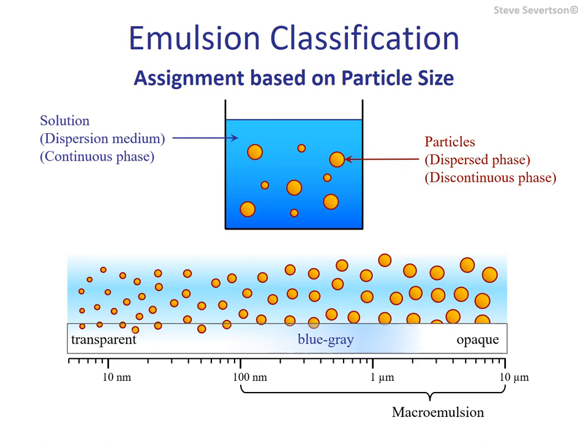Many emulsions, often considered a subset of macro emulsions, possess particle sizes ranging in radius from 100 nanometers up to 1 micron. Such emulsions are translucent, possessing a blue-gray hue. Nano emulsions are kinetically stable colloids possessing particle radii ranging from about 10 up to 100 nanometers, and such colloids are optically clear.